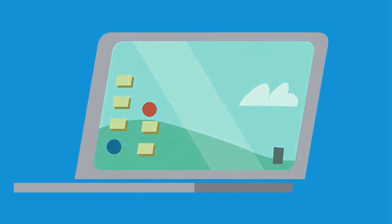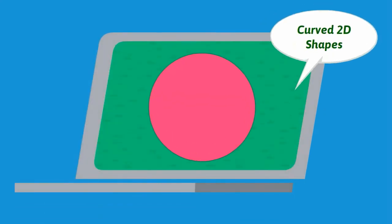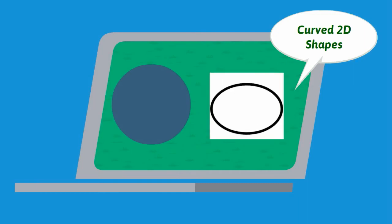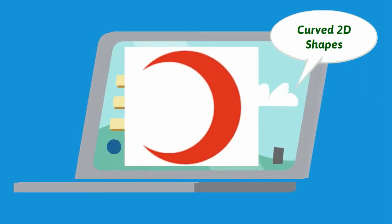Some 2D shapes are curved and have curved lines instead of straight lines. Common examples of curved shapes include a circle, an ellipse — which looks like a circle that has been stretched or squashed — and a crescent.